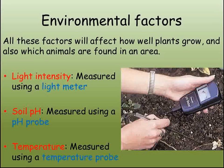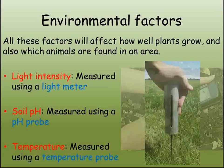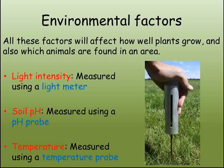The last environmental factor we will look at here is temperature. This will affect how well plants in particular grow, as we know from our work on photosynthesis and limiting factors. A temperature probe is more accurate and will give a quicker reading than a traditional thermometer.